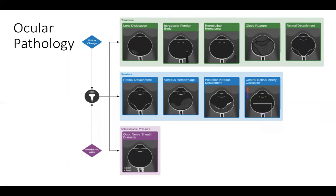For lens dislocation, you're looking at the lens — which is between the anterior and the posterior chamber — and it will be completely shifted into the posterior chamber. This is not a subtle finding on ultrasound. You can also use ultrasound to assess for an intraocular foreign body; based on the type of foreign body, you'll see different artifacts — if you have a metal foreign body, you may see ring-down or reverberation artifact. We'll also look for a retrobulbar hematoma and show you what a globe rupture looks like on ultrasound, where you lose the contour of the posterior chamber completely.